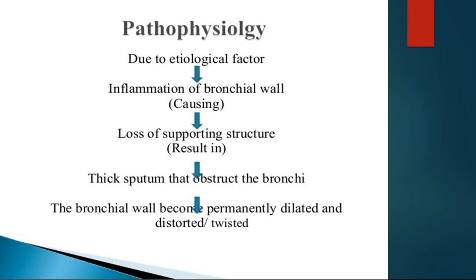Coming to the pathogenesis of bronchiectasis: due to any etiological factor — whether acquired like aspiration, pneumonia, tuberculosis, or foreign body — there will be inflammation of the bronchial wall, leading to loss of supporting structures like collagen and hypertrophy of mucus glands, causing increased mucus secretion which obstructs the airway. As collagen support is lost, the bronchial wall becomes permanently dilated and twisted.